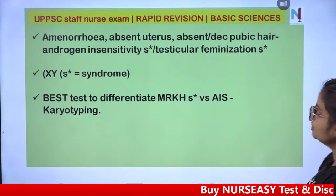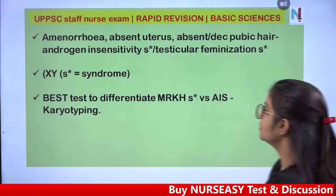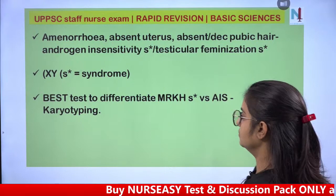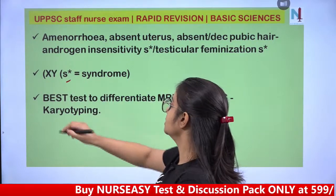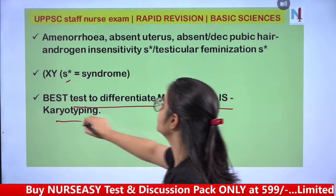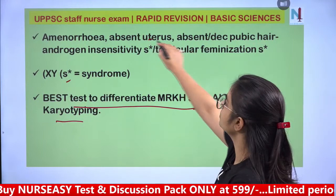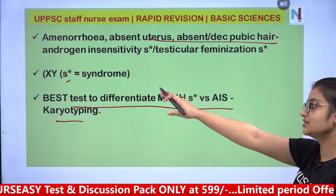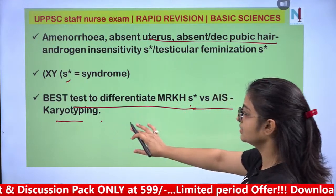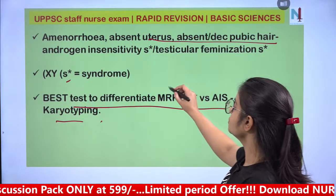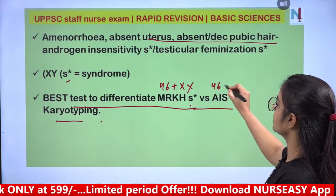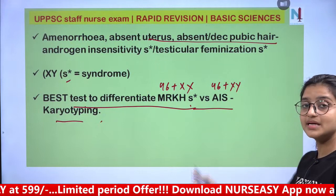In androgen insensitivity syndrome (AIS): amenorrhea, absent uterus, absent or decreased pubic hair — also called testicular feminization. The best test to differentiate MRKH versus AIS is karyotyping: MRKH has 46,XX while AIS has 46,XY.